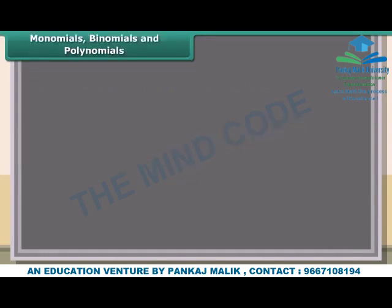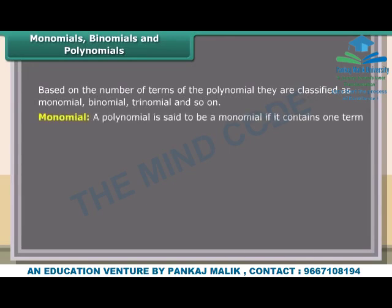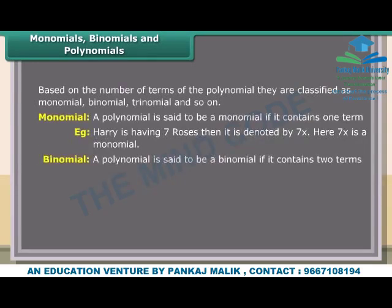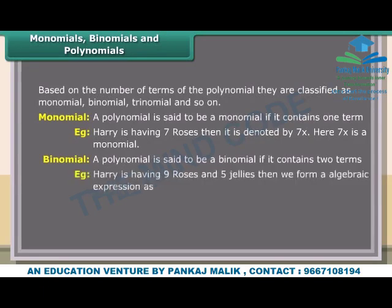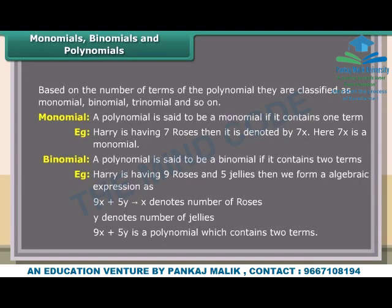Monomials, binomials, and polynomials: Based on the number of terms, polynomials are classified as monomial, binomial, trinomial, and so on. Monomial: A polynomial with one term. Example: Harry has 7 roses, denoted by 7x — so 7x is a monomial. Binomial: A polynomial with two terms. Example: Harry has 9 roses and 5 jellies, expressed as 9x + 5y, where x denotes roses and y denotes jellies — 9x + 5y is a binomial.